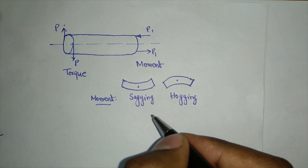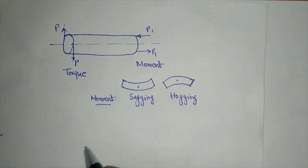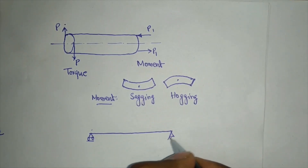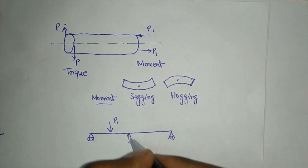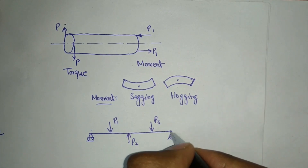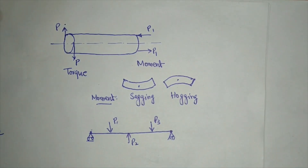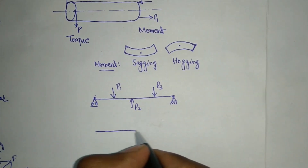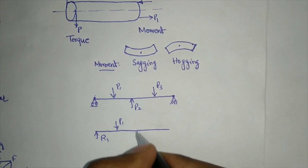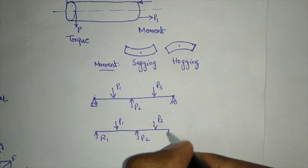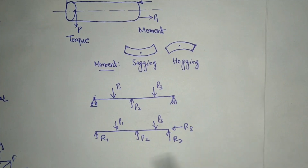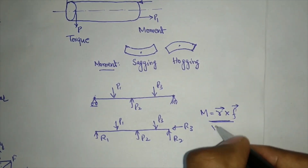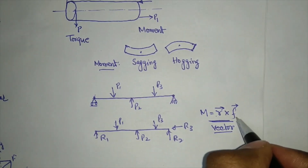There is one more important thing about moment and torsion. Consider a beam resting on two supports with several forces P1, P2, P3 and two reactions. When writing the bending moment equation at any given point, remember that moment is R cross F — it is a vector product of R and F, not F cross R. Always remember: R cross F.